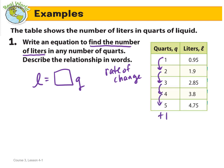And we can see that as each quart goes up, our liters go up by 0.95, all the way to the end. So our rate of change is 0.95. Each quart is 0.95 liters. So I can take my rate of change, 0.95 times Q.